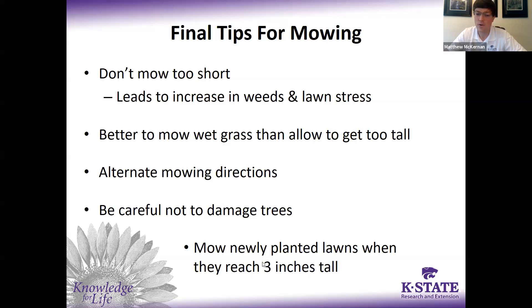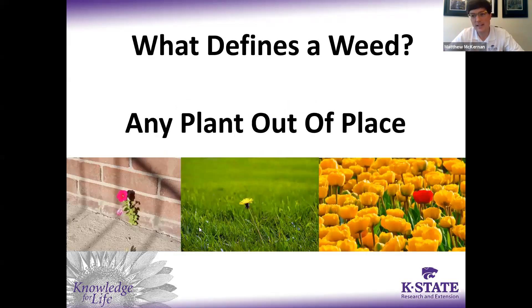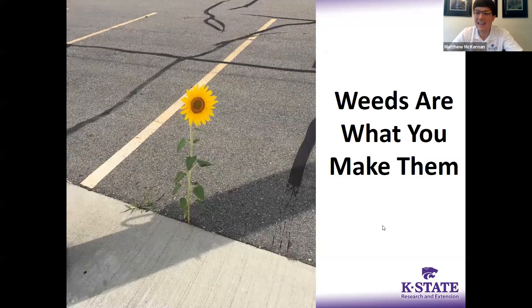The last thing to focus on today is controlling weeds. Everybody is going to define weed differently — basically a weed is any plant out of place. For some people that may be a dandelion; others may want dandelions in the lawn for pollinators and bees in early spring. For some, a petunia in a sidewalk crack can be a weed; for others, a weed could be a red tulip in a field of yellow tulips. A weed is any plant out of place, and even a beautiful sunflower growing in a sidewalk crack could be considered a weed.